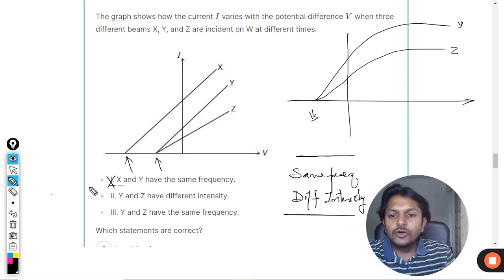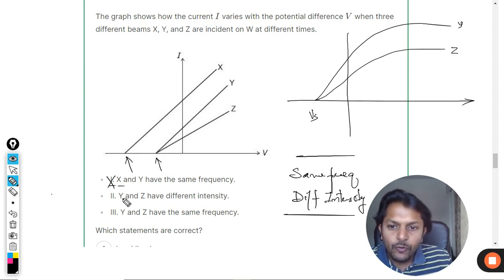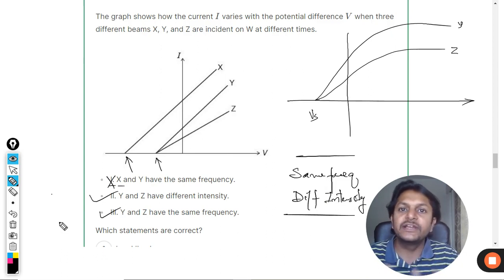Okay, so the stopping potential is not coming out to be the same for X and Y. Y and Z have different intensities - absolutely correct. And Y and Z have the same frequency - absolutely correct. So two and three is absolutely correct.